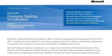XP Mode — the XP virtual machine in Windows 7 — if you have Windows 7 Pro and upwards, comes for free. You can install the incompatible application on the XP virtual machine and keep running it seamlessly within your Windows 7 desktop.